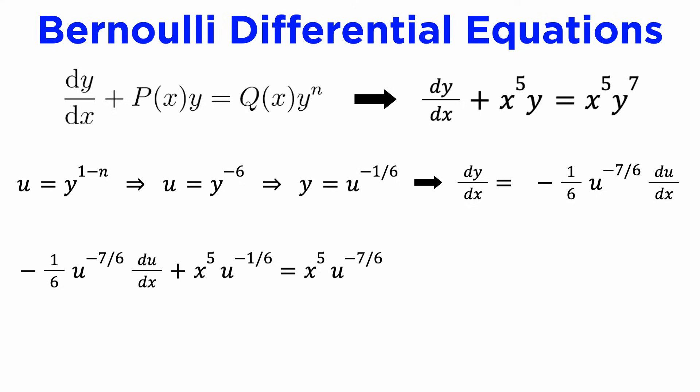This looks complicated, but we are guaranteed that this must simplify to a linear DE, so let's simplify it by dividing both sides by the coefficient of du/dx, which is equivalent to multiplying both sides by negative 6u to the 7/6, and we find that we do indeed get a simple linear DE.